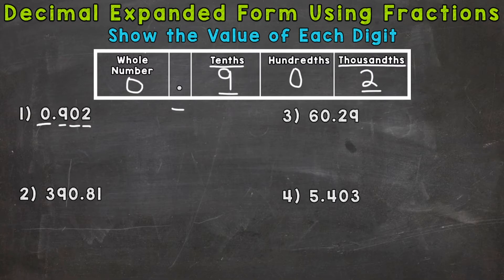So the first way is a little bit simpler, and we can just write nine tenths, nine tenths, plus two thousandths, two thousandths.